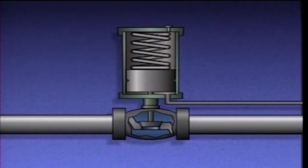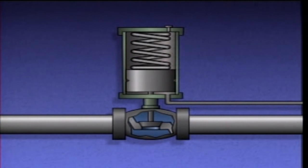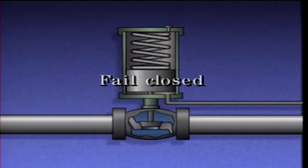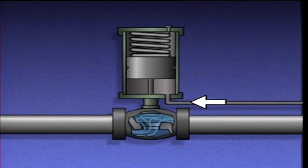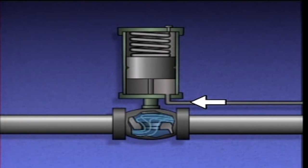If air pressure drops below a predetermined value or is lost completely, the spring will force the piston down to close the valve — the valve will fail closed. Since air pressure is only fed to one side of the piston, this type is called single-acting.